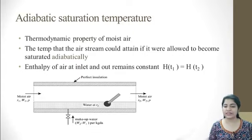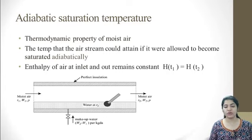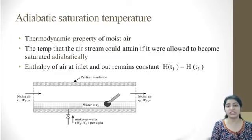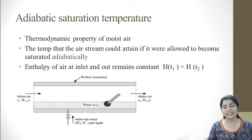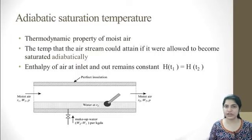The next topic is adiabatic saturation temperature. This is a thermodynamic property of moisture. The definition is: the temperature that an air stream could attain if it were allowed to become saturated adiabatically. Adiabatically means no heat input or heat output. An important point is that the enthalpy at the inlet and outlet stream remains constant. At position T1 — the temperature of the inlet dry gas — the enthalpy equals that of the moisture at adiabatic saturation temperature T2.